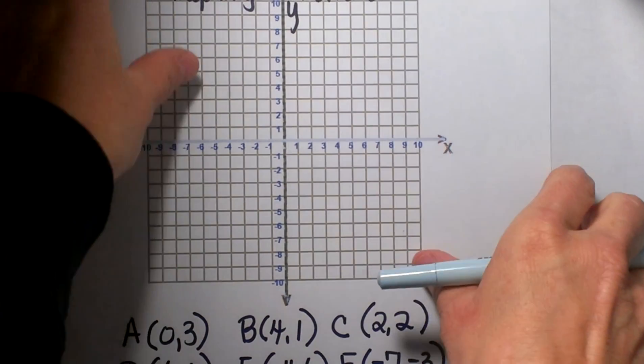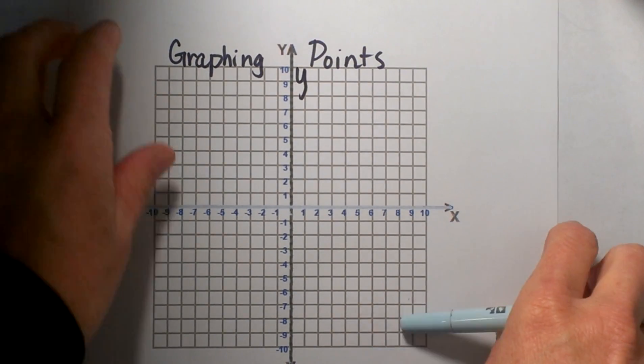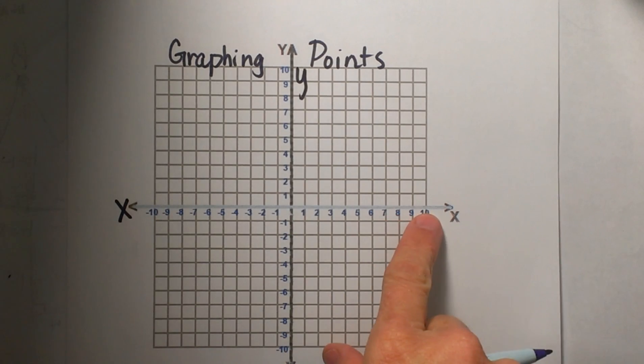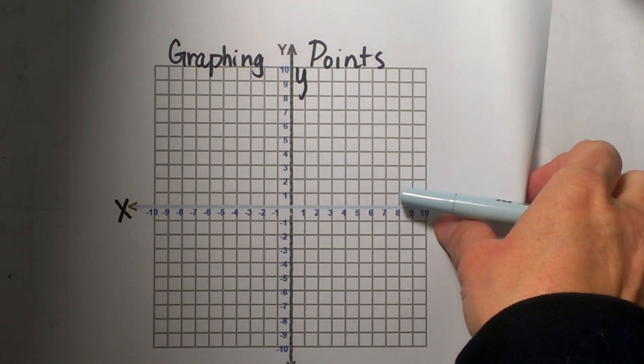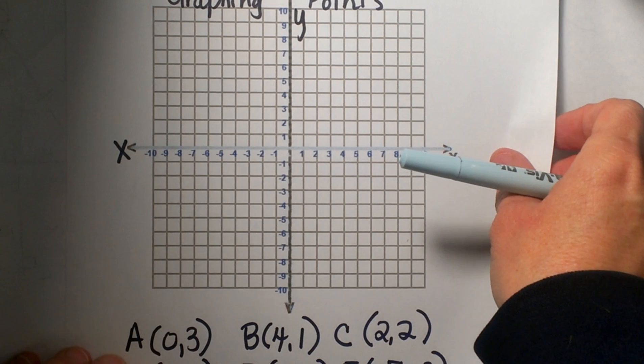Now look at graphing points on a Cartesian coordinate plane. So here we have an x-axis and a y-axis, and we have a list of several points we are going to look at and graph.